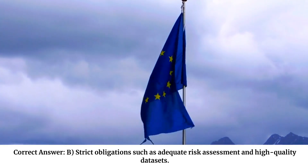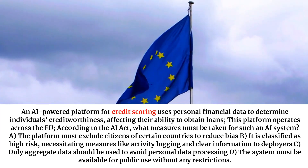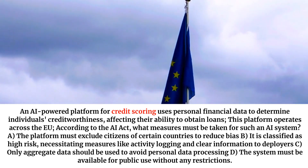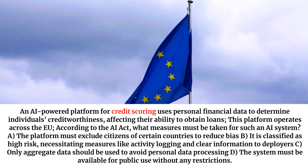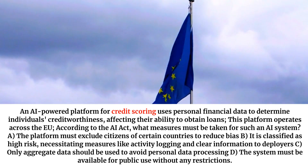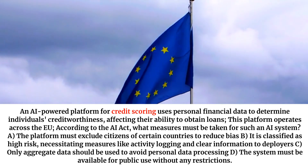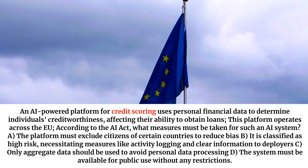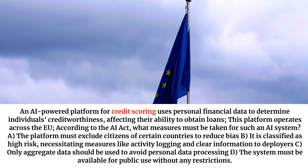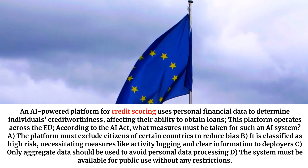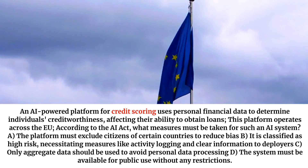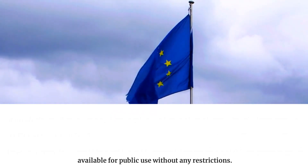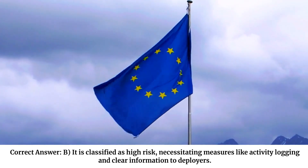An AI-powered platform for credit scoring uses personal financial data to determine individuals' creditworthiness, affecting their ability to obtain loans. This platform operates across the EU. According to the AI Act, what measures must be taken for such an AI system? A. The platform must exclude citizens of certain countries to reduce bias. B. It is classified as high-risk, necessitating measures like activity logging and clear information to deployers. C. Only aggregate data should be used to avoid personal data processing. D. The system must be available for public use without any restrictions. Correct answer: B. It is classified as high-risk, necessitating measures like activity logging and clear information to deployers.